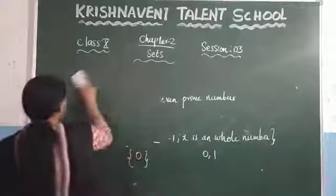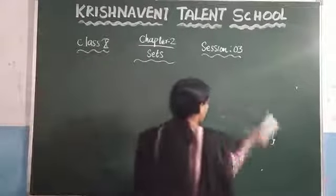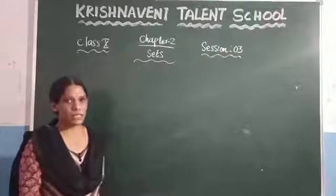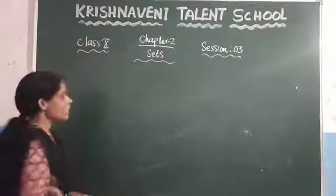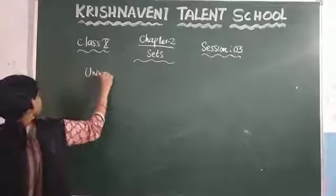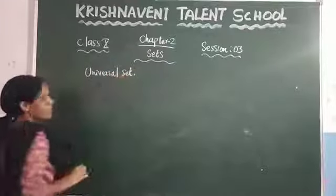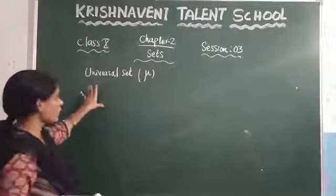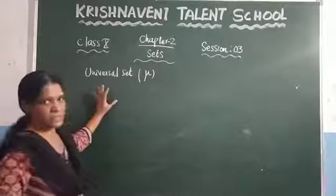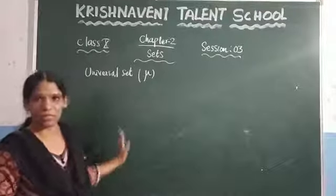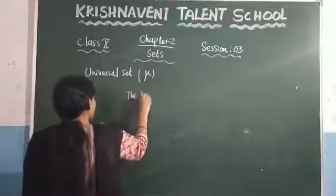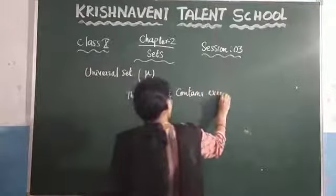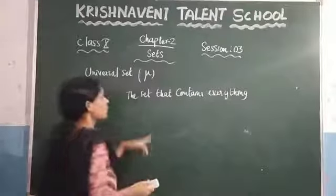Now see the next type, which is the universal set. The empty set contains no elements, and the singleton set contains only one element. The universal set is denoted by the letter μ. As the name says, the set that contains everything we call a universal set, and it is denoted by μ.